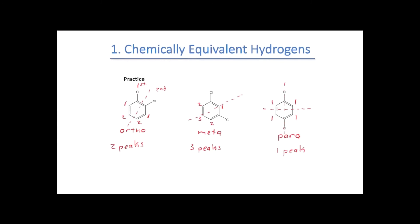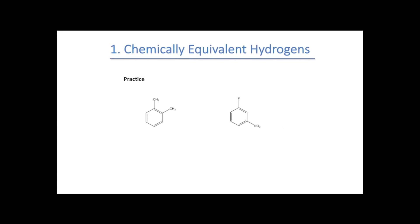Let's look at a couple more examples — one where the two substituents are the same, and one where they're different. For O-xylene, which has two of the same methyl substituents, we can see there's a mirror plane right between the two methyl groups, making them equivalent to each other. They would give one signal in our NMR spectra. A second signal will come from the hydrogens that are ortho to them, and the third signal will come from the hydrogens that are meta. So O-xylene gives us three peaks in our NMR spectra.